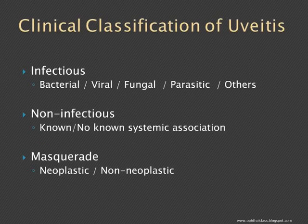The clinical classification is: infectious, non-infectious, and masquerade syndrome. All types of uveitis will have a group of infectious causes as the differential diagnosis, as well as non-infectious and masquerade. Masquerade means they are not true uveitis but they mimic uveitis. The causes could be neoplastic like leukemia or lymphoma, or non-neoplastic like intraocular foreign body or retinitis pigmentosa. The infectious causes are bacteria, virus, fungus, or parasites.